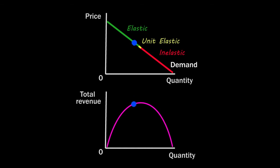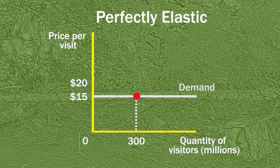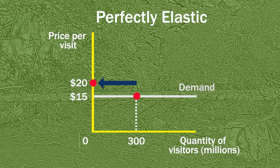And in the elastic range of a demand curve, a price increase lowers total revenue because the decrease in the quantity is large relative to the increase in price. A perfectly elastic demand curve is horizontal, meaning that a price increase will cause the quantity demanded to go to zero.